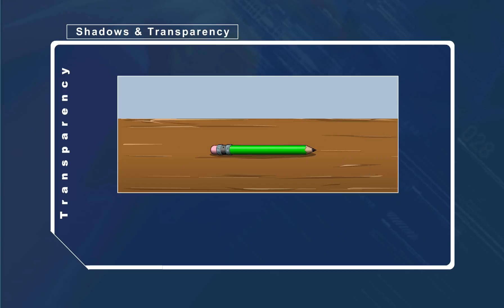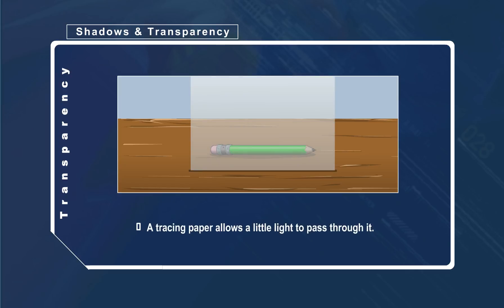Some materials or objects such as tracing paper and frosted glass allow a little light to pass through them. We are able to see through these objects. However, objects behind them appear blurred. We describe this type of material or object as translucent.